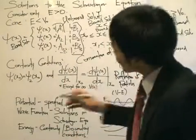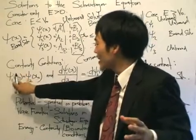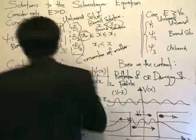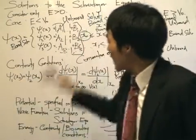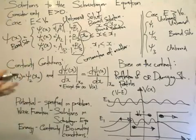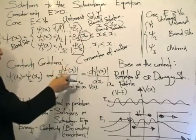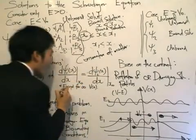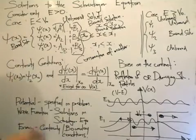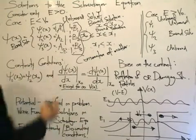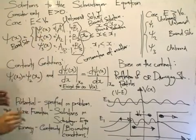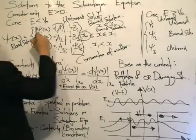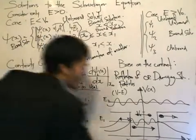The continuity equations are actually very simple. At a certain point x naught, where two equations meet, they are going to be equal: psi 1 at x naught equals psi 2 at x naught. The first derivative with respect to x is also going to be equal — we differentiate psi 1 and psi 2 and evaluate at x naught — except for the case of an infinite potential, more on that later. This allows us to write the coefficients nicely, applying the same conditions to psi 2 and psi 3 evaluated at x₁.